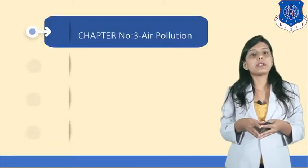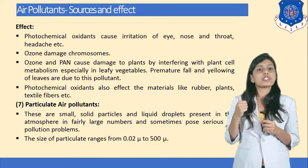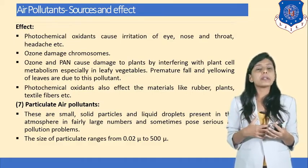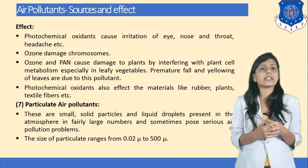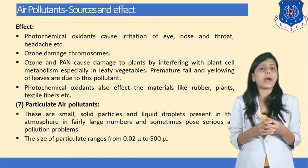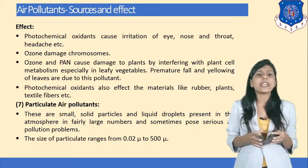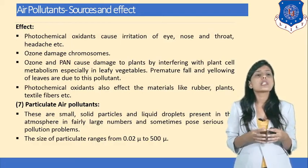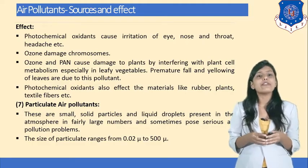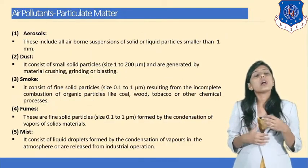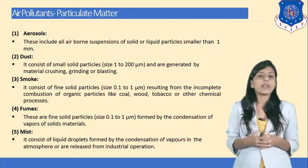Today we are going to talk about chapter three: air pollution. We have already learned about sources of air pollutants in gaseous state. Now we will learn about sources of air pollutants in particulate matter form — which means they can be in the form of solid particles or suspended particles in air. These are small solid particles and liquid droplets present in the atmosphere in fairly large numbers, sometimes posing serious air pollution problems. The size of particulate ranges from 0.02 micron to 500 micron. The particulate forms of air pollutants include aerosol, dust, smoke, fumes, and mist.